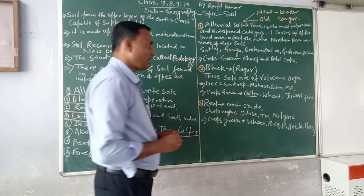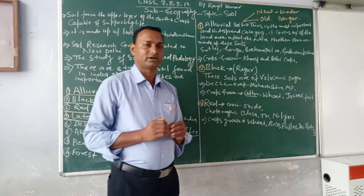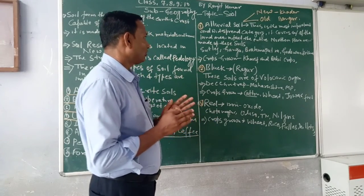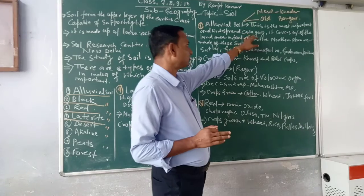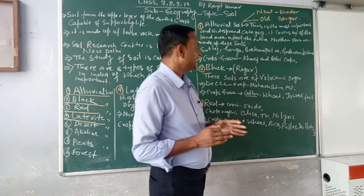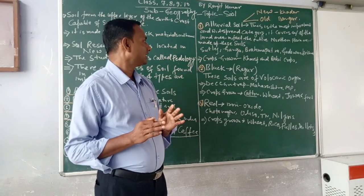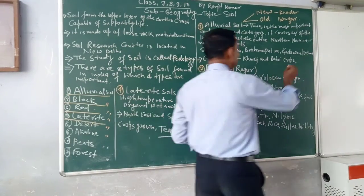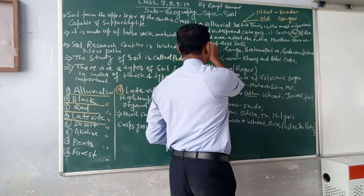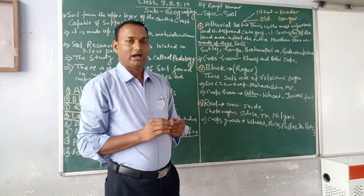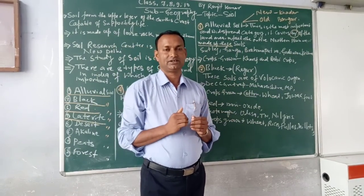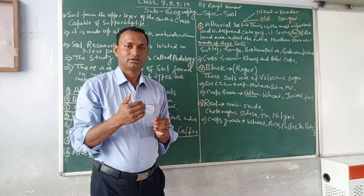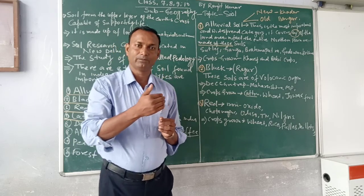First, Alluvial soil. Alluvial soil is very important. It covers about 40% of the total land area of India. Alluvial soil covers 40% of India's total land area and is the most important type of soil.